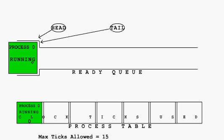The next object to point out is the Process Table with the text Process Table under it. It is modeled as a large rectangle with squares inside of it. Try to think of it as a table with one row and many columns. Each column or cell in the table contains all processes that are in one of four possible states.